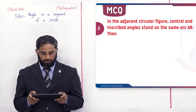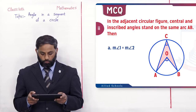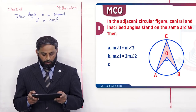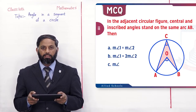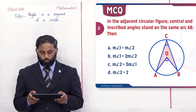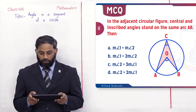Second MCQ: In the adjacent circular figure, central and inscribed angles stand on the same arc AB. Option A: measurement of angle 1 = measurement of angle 2. Option B: measurement of angle 1 = 2 × measurement of angle 2. Option C: measurement of angle 2 = 3 × measurement of angle 1. Option D: measurement of angle 2 = 2 × measurement of angle 1.